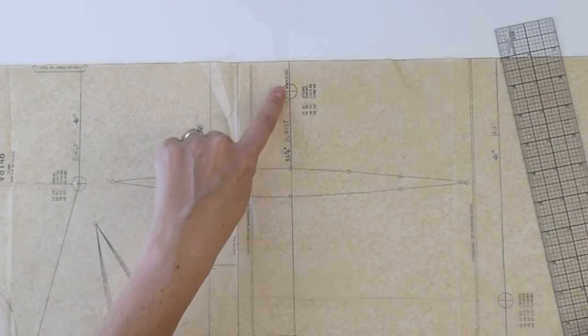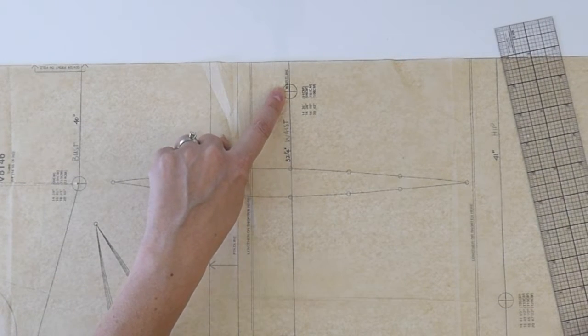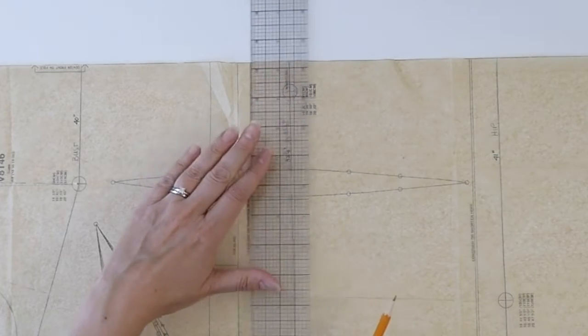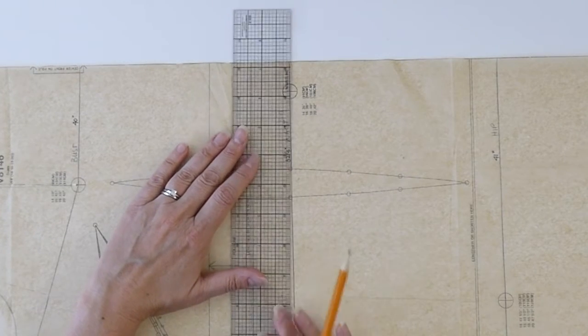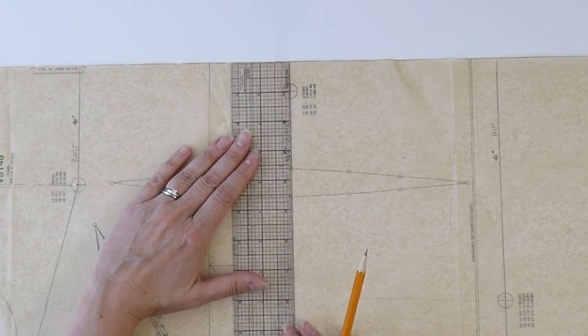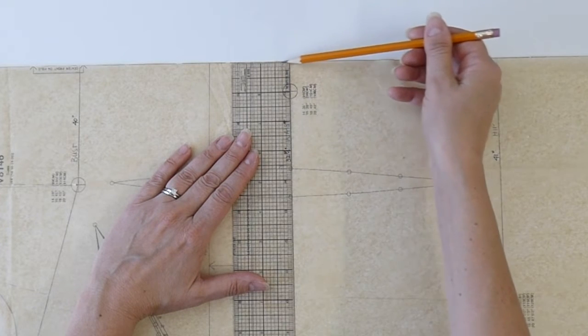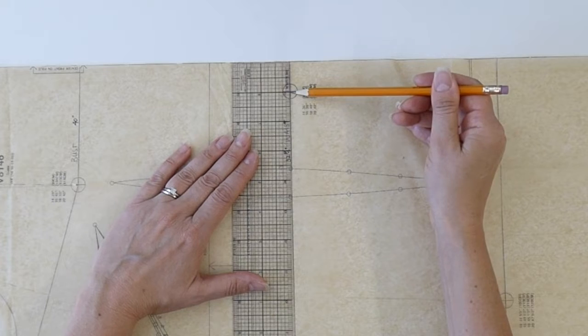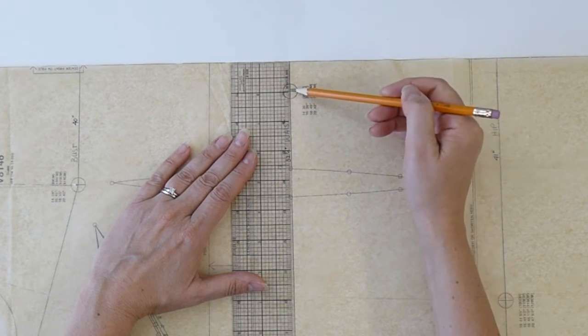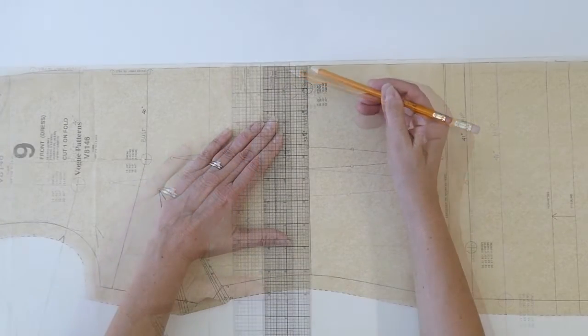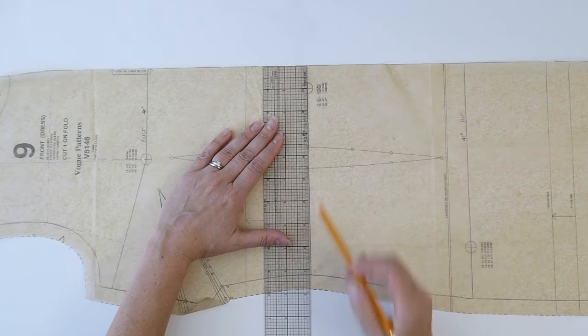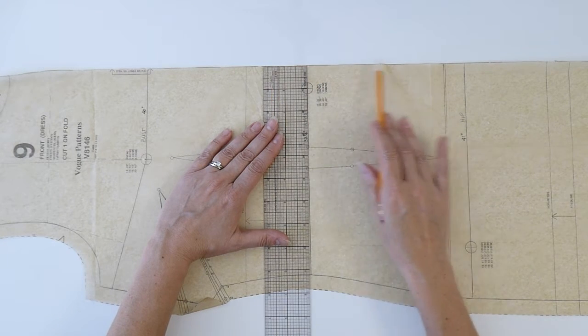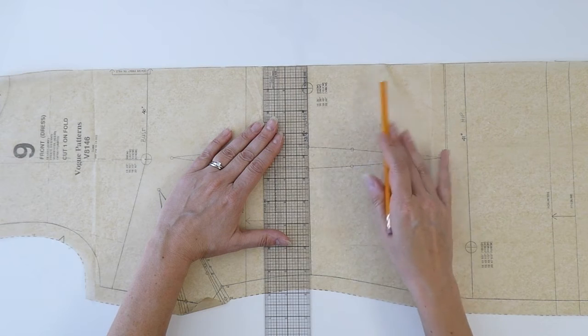But let's talk about the waist and the hip. So you can see here that the waist marking is right here. All I've done here is taking my grid ruler and I have lined up one section of the ruler, the edge of the ruler here and the other part of the ruler is going straight through the waistline marking here.